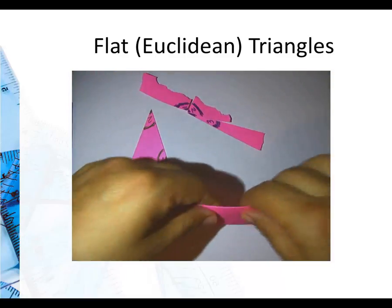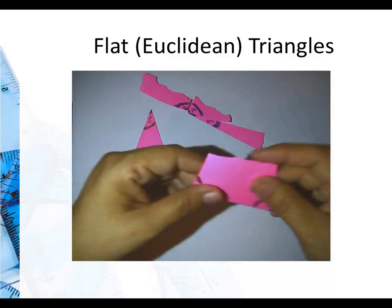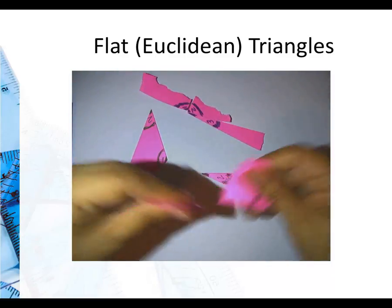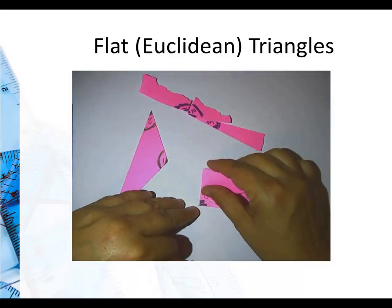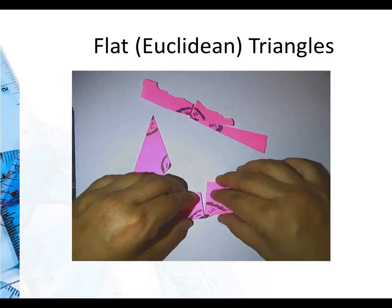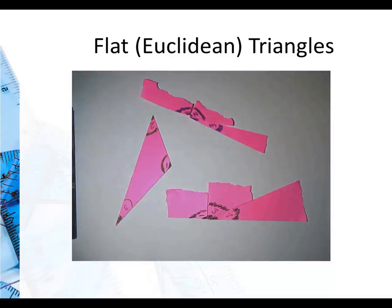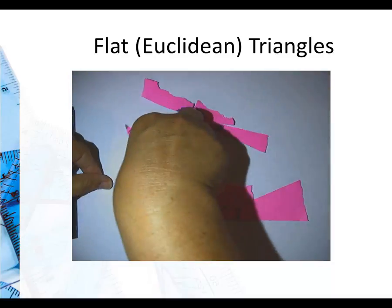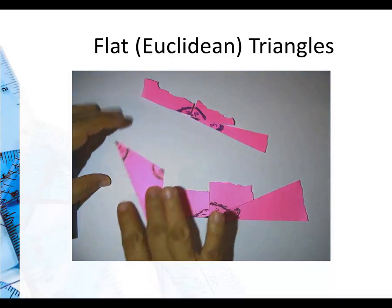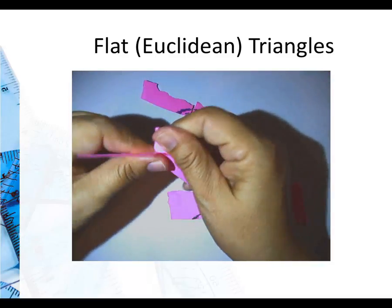And let's say I take this one, here's one piece, then I tear the other two angles off and I put those angles together. And for this right triangle, you can see that the angles add up to 180 degrees.